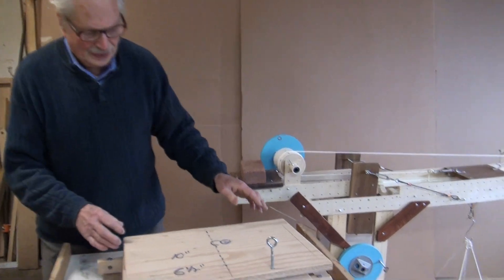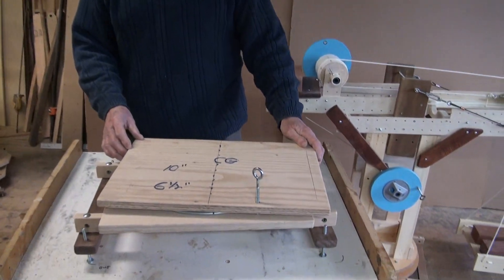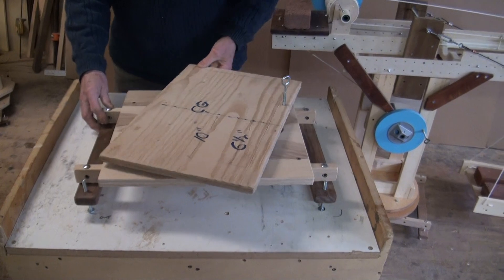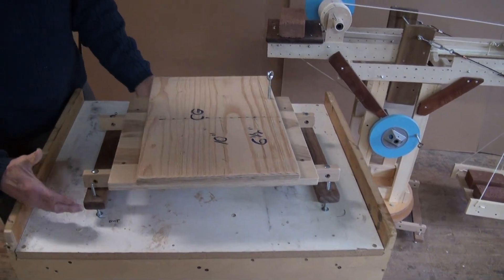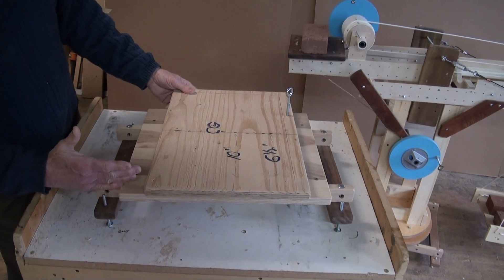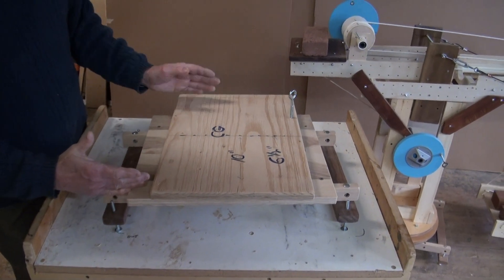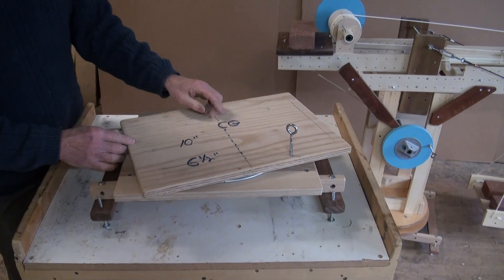Now, when we swiveled, when I slewed the crane 90 degrees, now it's going to tip this way. So these are the outriggers it's going to tip on. And the distance is not 10 inches, six and a half.